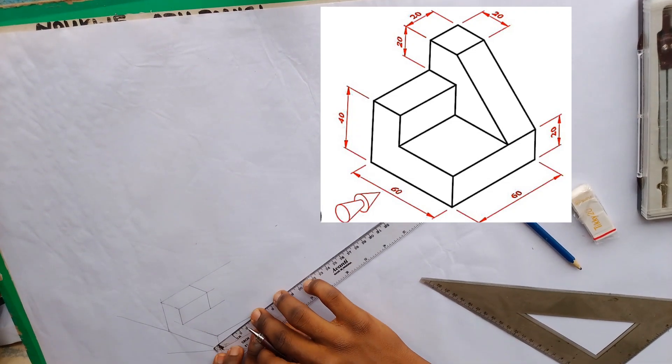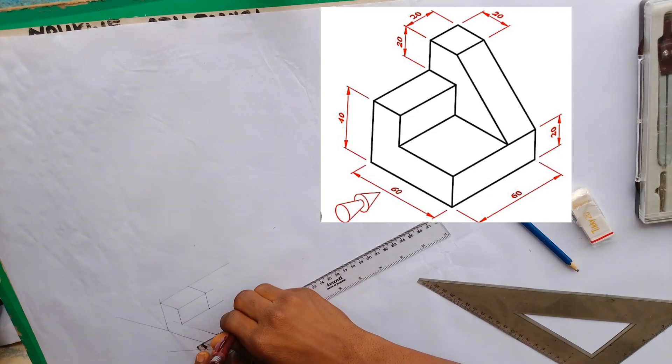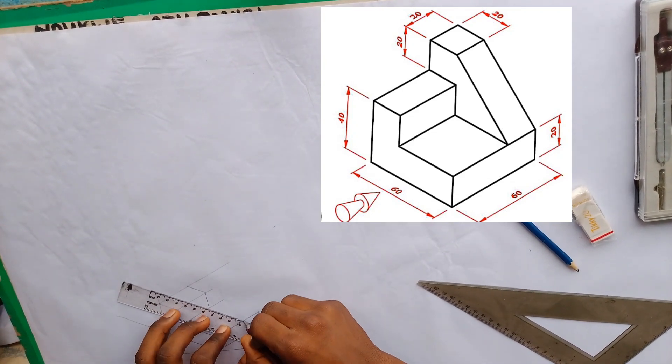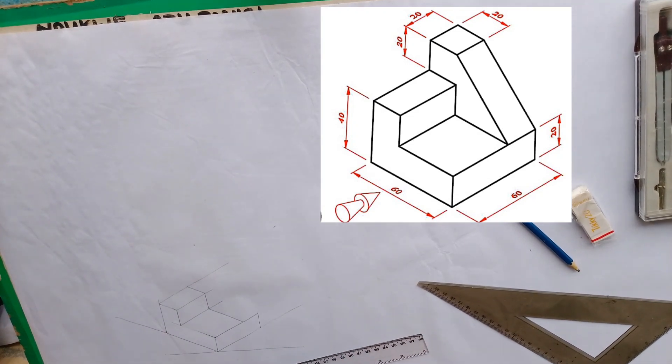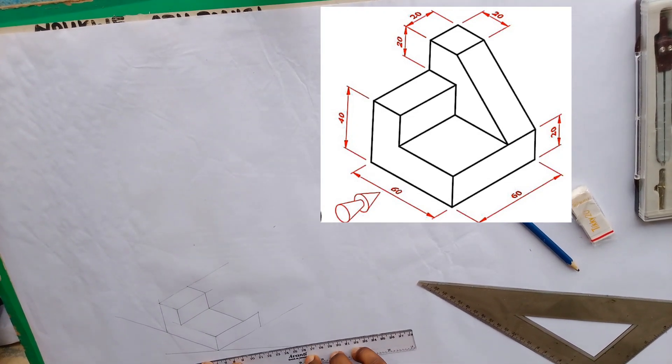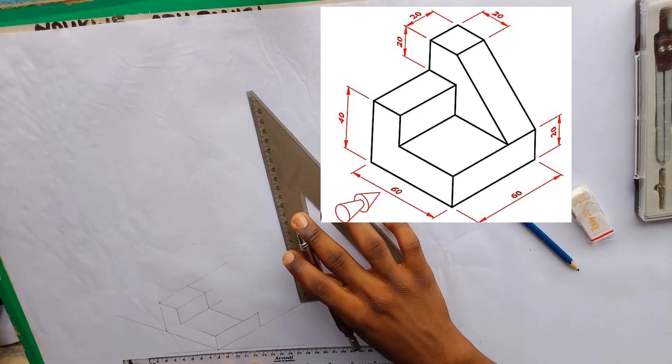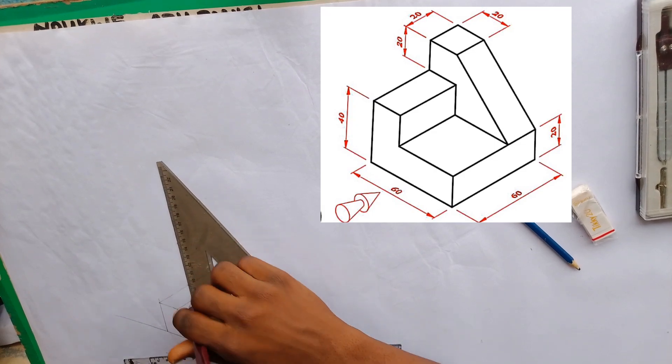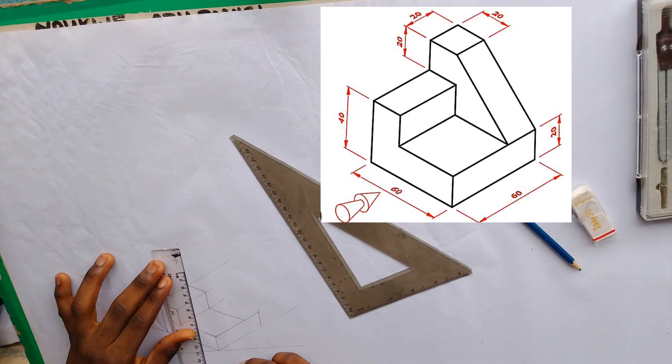From here to here too, would also be 40. A line projects upwards from here. And this is 20 millimeters.